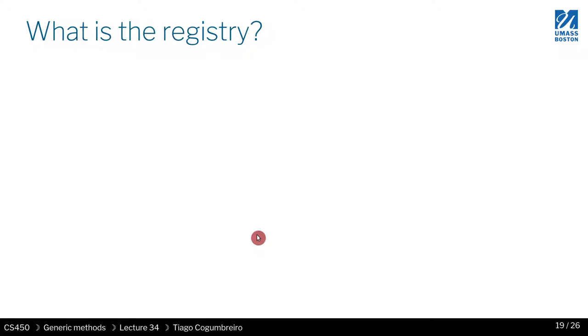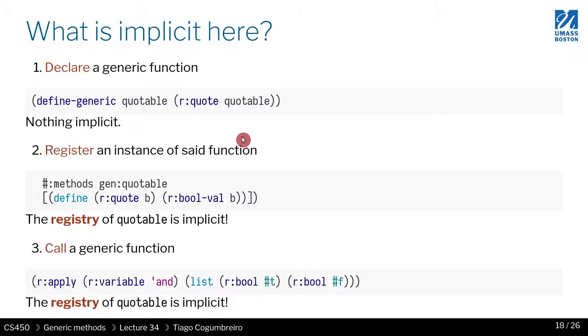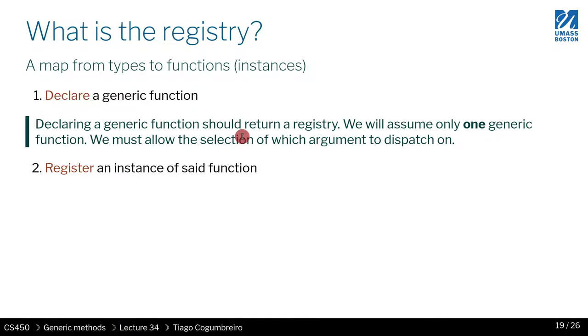What does a registry contain? Well, it must contain, you can think of it basically as a map. That goes from the values are the types or the structs, and those are the keys, and the values have to be the implementation of each type. So what do we need?